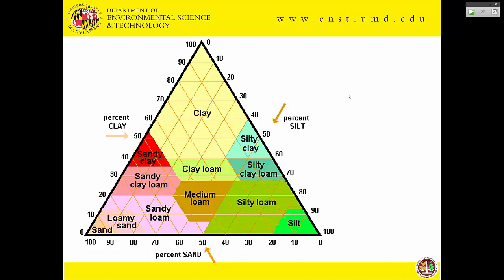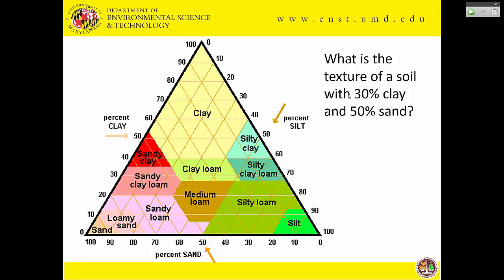This is what's called a soil textural triangle. There are 12 types of soil texture: clay, sandy clay, sandy clay loam, clay loam, silty clay loam, silty clay, medium loam, sandy loam, loamy sand, sand, silty loam, and silt. To read it you need at least two values. For example, what is the texture of a soil with 30% clay and 50% sand? For clay, follow the lines in the clay direction — find 30%, follow it out. For sand, find 50% and move up. You'd land on sandy clay loam. It's a simple way of finding out what texture you have.